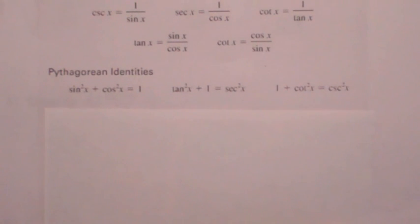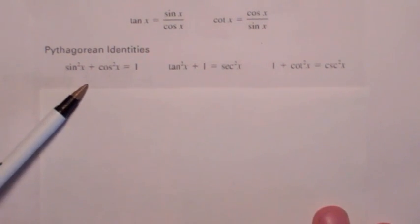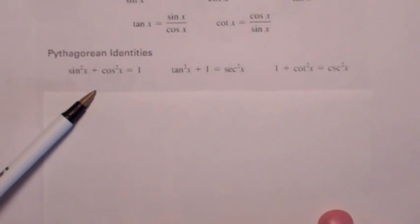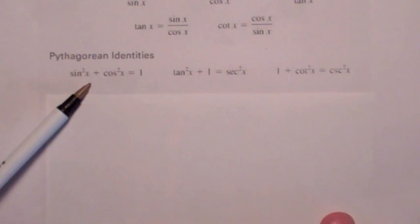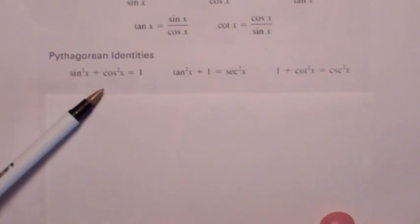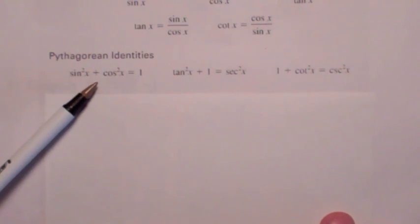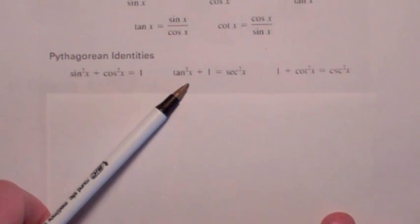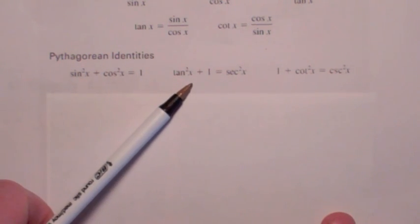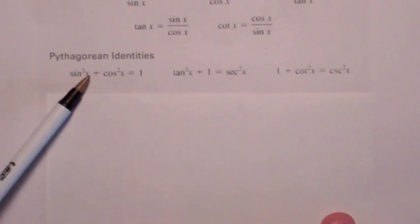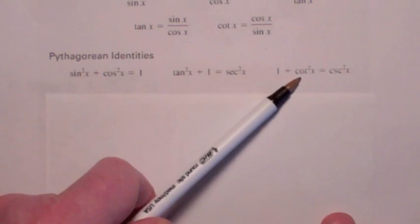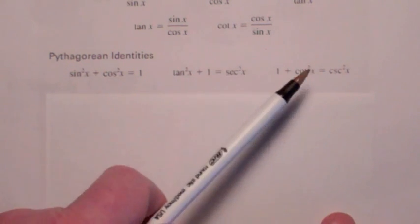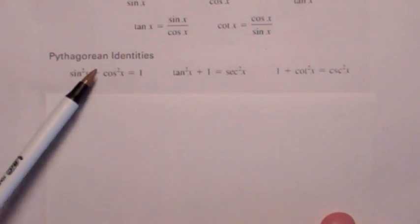The Pythagorean identity is very useful, especially this first one — it comes up all the time. This just says that the point lies on the unit circle: cosine squared plus sine squared equals 1. If you divide both sides by cosine squared, you get the second one, and if you divide both sides by sine squared, you get the third one. You can always derive the second and third from the first.